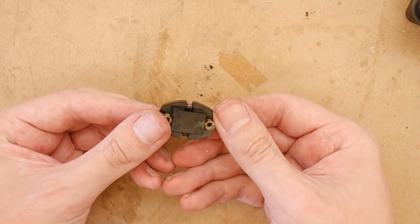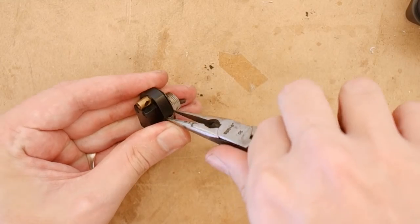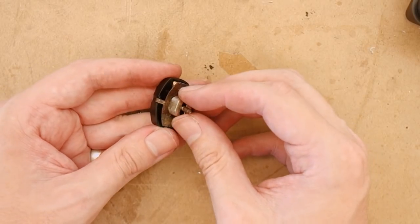Some of the switches are just held together with bent tabs of metal and they come apart very easily by just bending up the tabs.